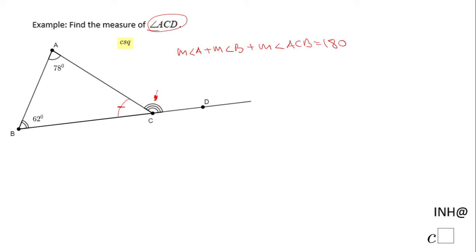That's what I meant when I said the sum of the interior angles of the triangle is 180. So that will give us 78 plus 62 plus the measure of angle ACB equals 180. Now we can add 78 and 62, and that will be 140.